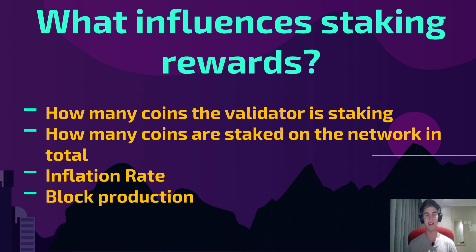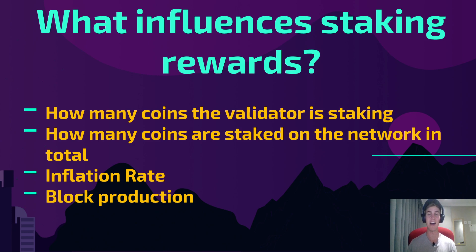Firstly, it's how many coins the validator is staking. There are different validators in the network — effectively a computer, a node on the network — and they'll have a certain amount of stake earning yield. The higher that number is, the lower your rewards will be, meaning you should mostly aim for the validator that has the least amount of stake with them. Secondly, how many coins are staked on the network in total? The more coins staked in total, the lower your reward will be, because your share of the pool is less compared to everything else staked on the network.